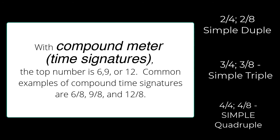Now, if you notice, the correlation between these two is that if you multiply the top number of the simple meter by the number 3 — 3 times 2 is 6, 3 times 3 is 9, 3 times 4 is 12. So, if the top number is 2, 3, or 4 — simple meter. If the top number is 6, 9, or 12 — compound meter.